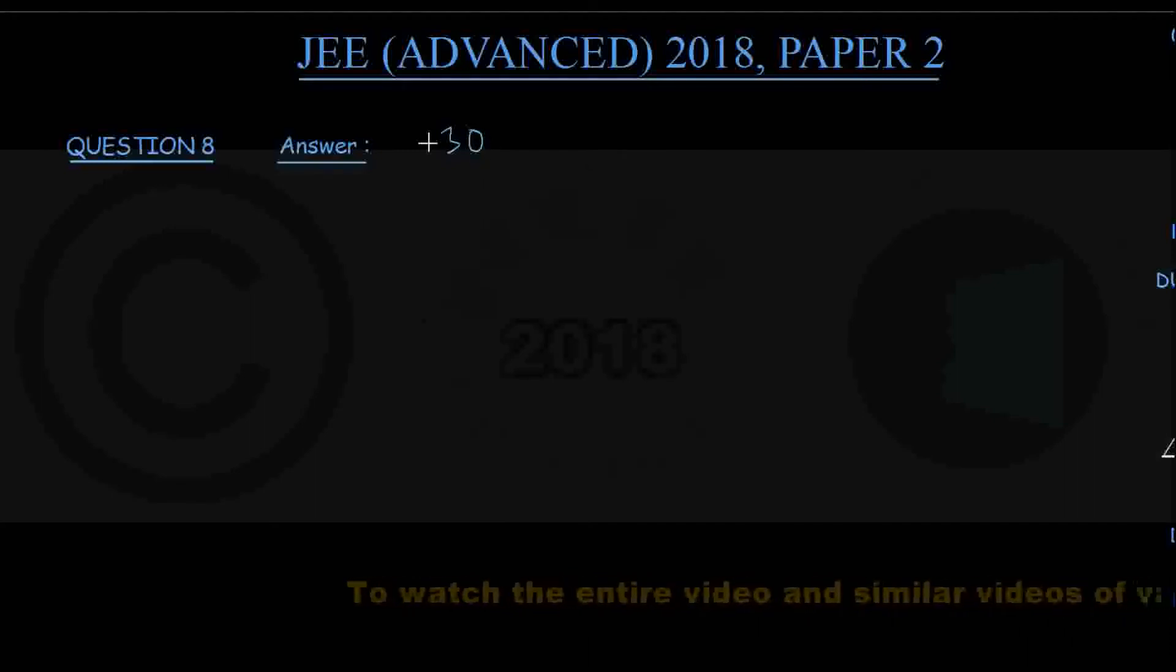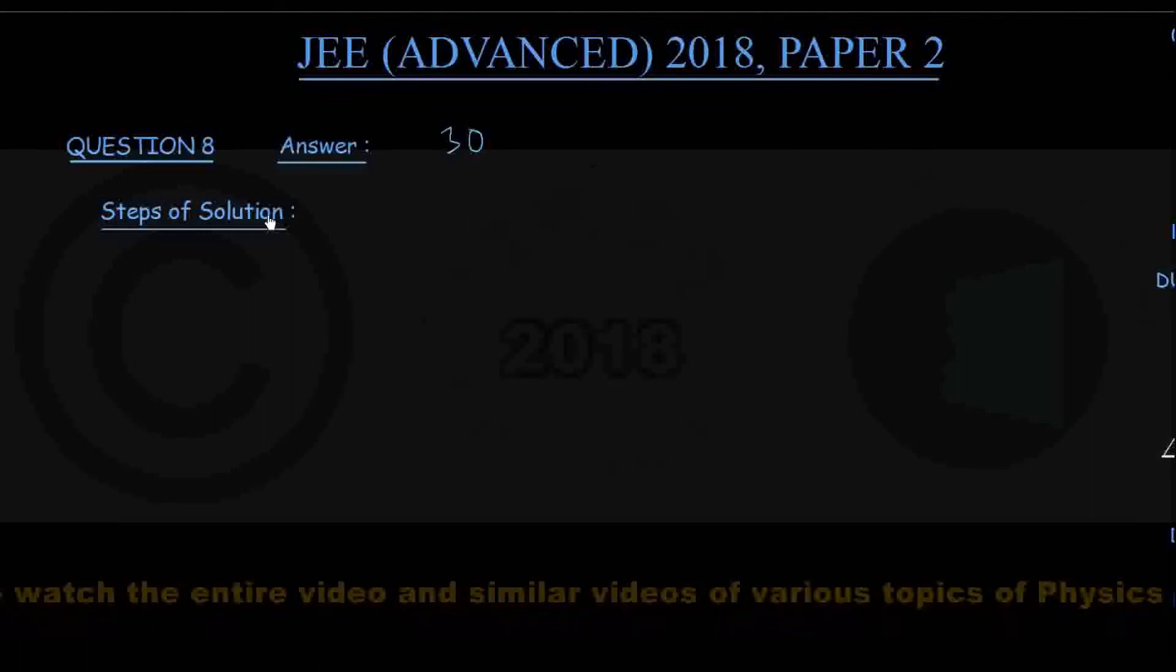Question number 8. The correct answer is 30. That is, the maximum height reached by the ball after the bounce is 30 meters above the ground. And how do we get it? Let us see a few steps.